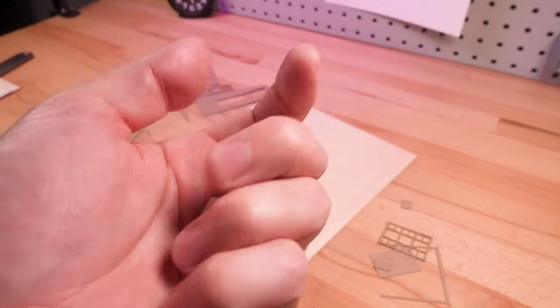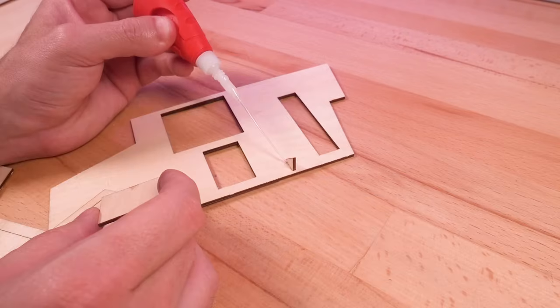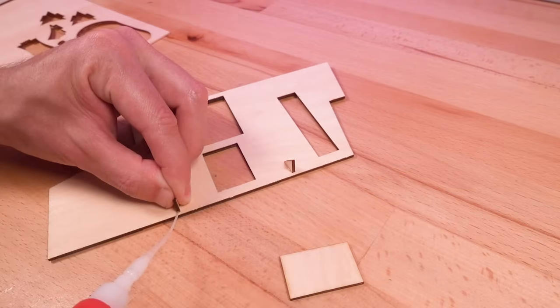These triangular gussets were added, which helped keep the walls at a 90 degree angle and ensure straight seams.